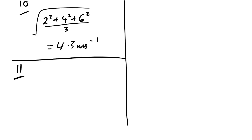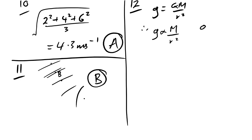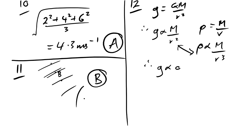Question 11: which point has the greatest gravitational field strength? These are equipotentials, and gravitational field strength is greatest where the equipotential lines are closest together — that's point B. Question 12: a planet has radius R. Gravitational field strength g ∝ M/R². Density ρ ∝ M/R³. Combining: g ∝ ρR. If both density and radius double, g increases by a factor of 4. Answer is B.